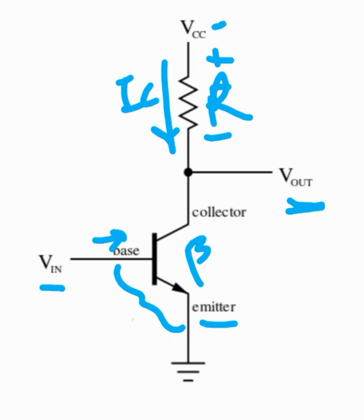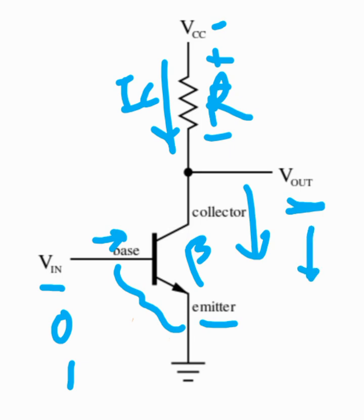The output voltage will be VCC minus IC times R. This drop makes the output voltage lower. So when you have 0 volts at the input you have a high output voltage, and when you have a high voltage at the input you have a lower output voltage — that's how the transistor acts as a switch.